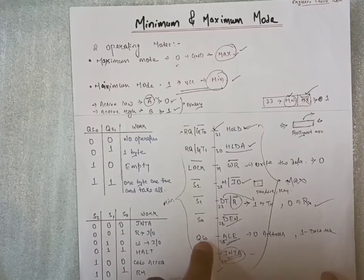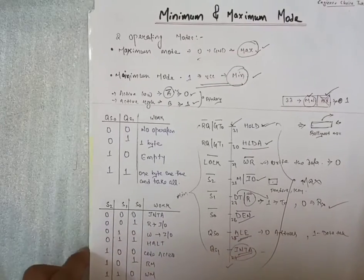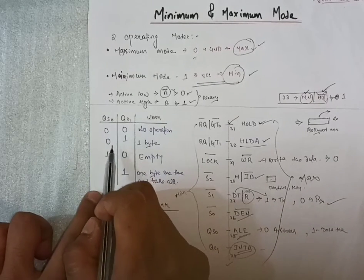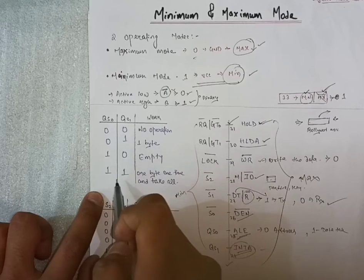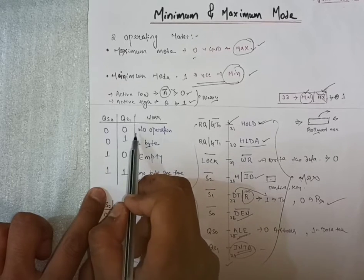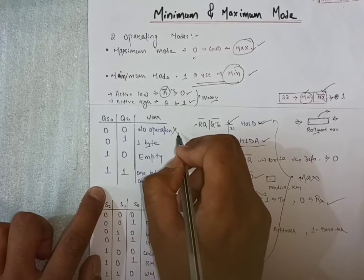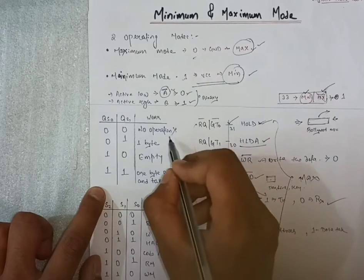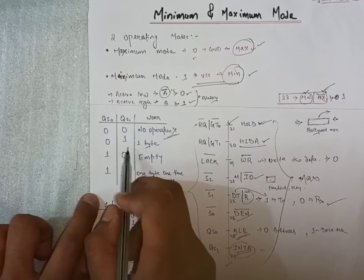Coming towards the minimum mode of 8086, we can see QS1 and QS0, that is 24 number pin and 25 number pin. So we will see one table, that is binary table. We will first take zero zero, zero one, one zero, one one. If the value of QS0 and QS1 is zero zero, then no operation is going on means it is in idle state. No work is going on, no operation is performing here.